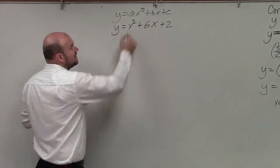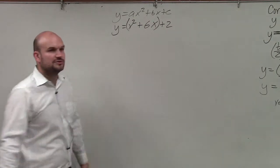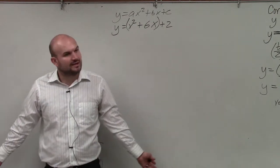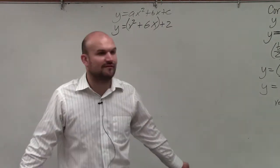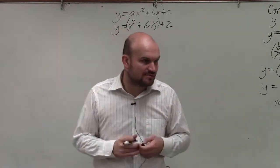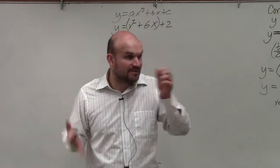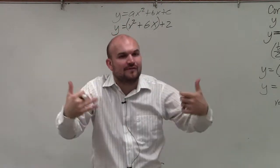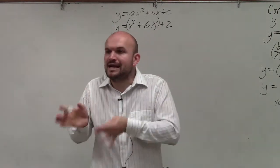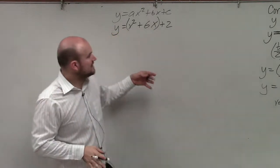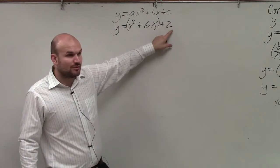So everybody that I went around and looked at, I should have seen everybody put parentheses around the first two terms. That's the basic thing. Because remember, we need to create a perfect square trinomial to convert from standard form to vertex form. This is not a perfect square trinomial.